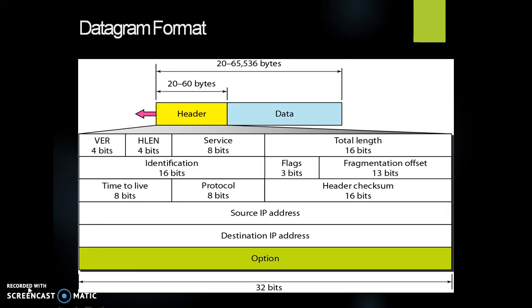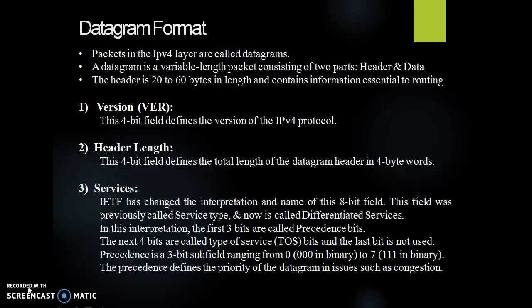The following diagram shows the IPv4 datagram frame format or protocol suite. Packets in the IPv4 layer are called datagrams. A datagram is a variable length packet consisting of two parts: header and data. The header is 20 to 60 bytes in length and contains information essential to routing and delivery.